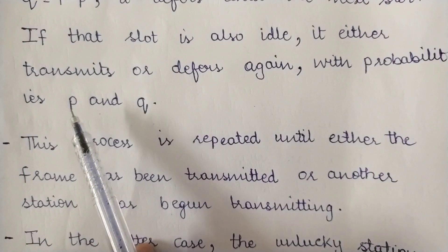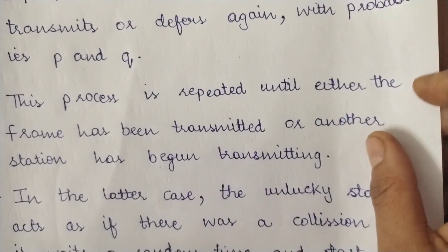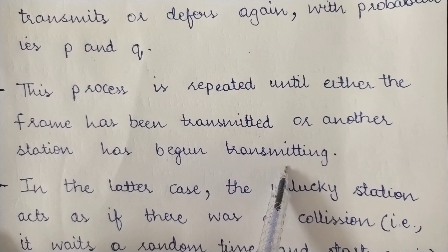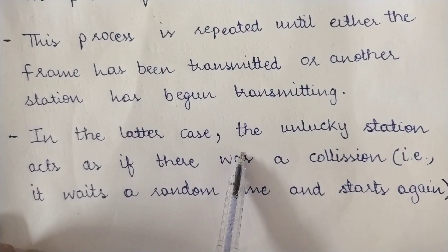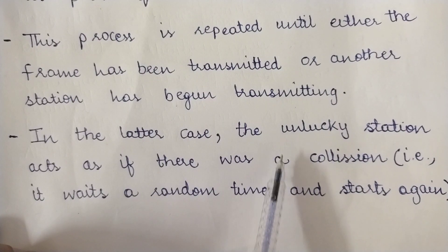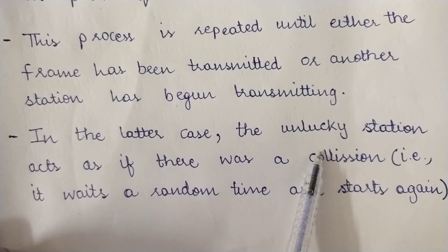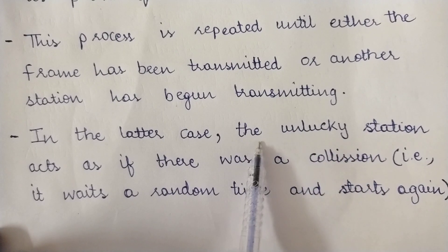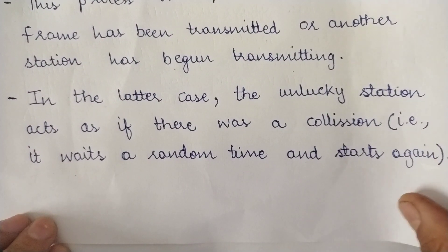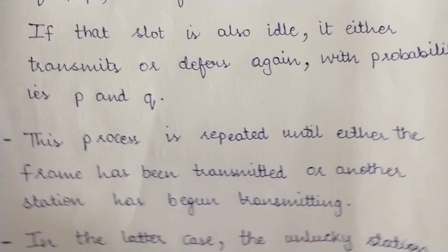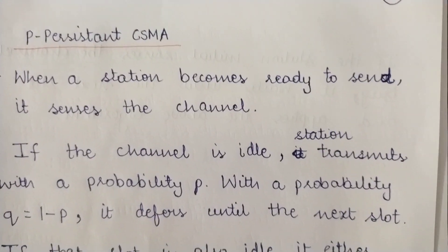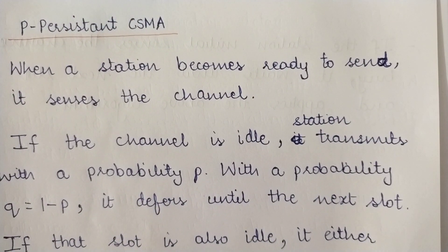This process is repeated until either the frame has been transmitted or another station has begun transmitting. In the latter case, the unlucky station that did not get to transmit acts as if there was a collision — it waits for a random amount of time and then starts all over again, sensing the channel and transmitting with probability p or deferring with probability q = 1 − p. These are all the versions of CSMA: 1-Persistent, Non-Persistent, and P-Persistent.